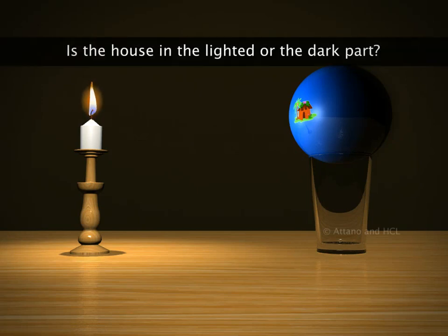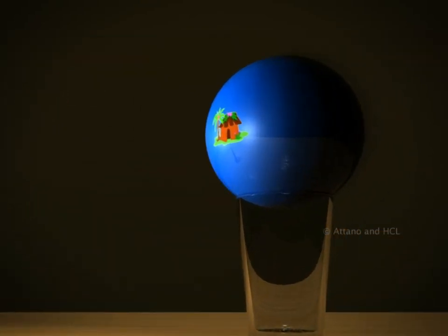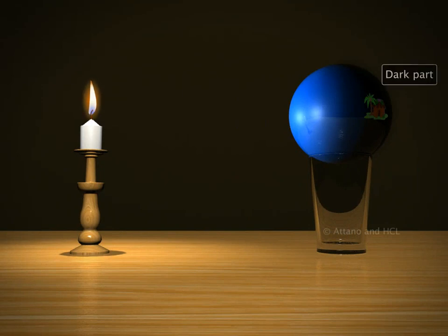Is the house in the lighted or the dark part? Yes, it is in the lighted part. Now, if you turn the ball, then the part with the house on it becomes dark as it does not receive light from the candle.